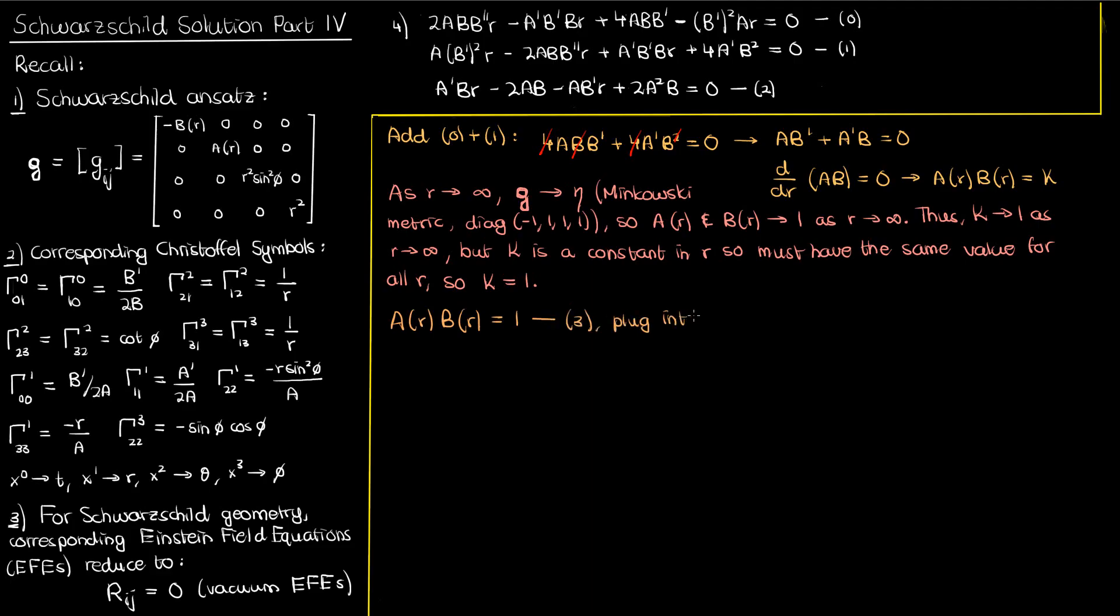Let's now use this fact to solve equation 2. We'll plug A times B equals 1 into equation 2 initially, so we'll get things to simplify to the following. Now since A is just 1 over B from equation 3, that means A' is just negative B' over B squared from the chain rule. If we now plug this into our simplified equation 2, here's what we'll get.